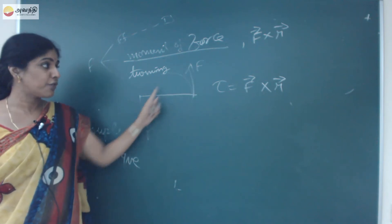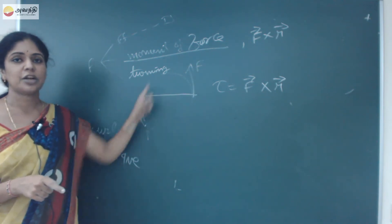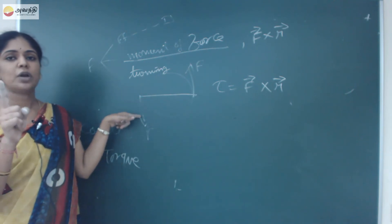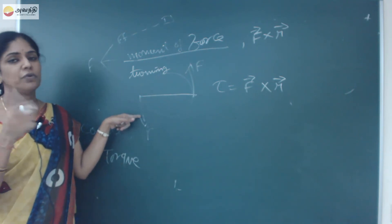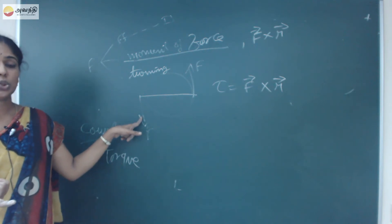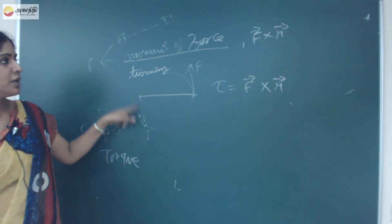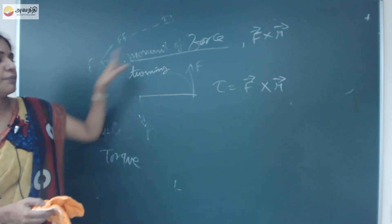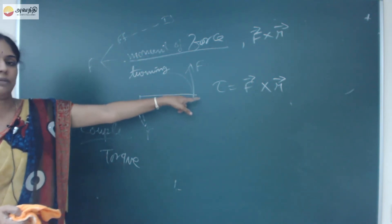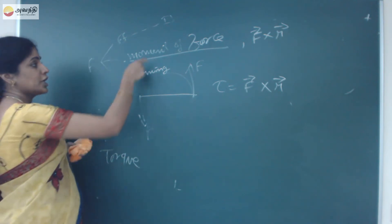Torque is equal to one of the forces — since two forces of equal magnitude are applied, we take only one force magnitude. So torque is equal to one of the forces into the perpendicular distance between the two forces. The moment of force and torque are both equal to F into R for rotational motion.